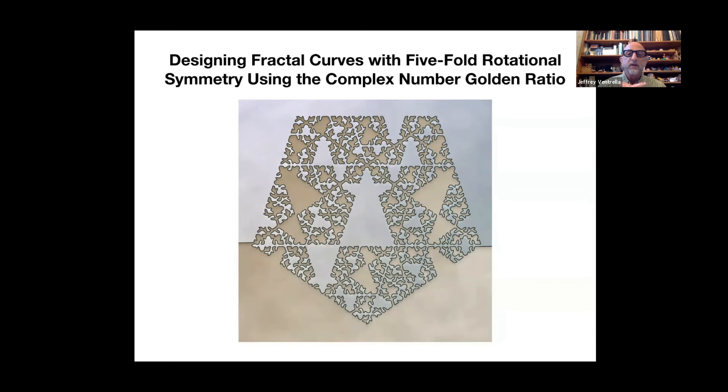This paper is called Designing Fractal Curves with Five-Fold Rotational Symmetry, Using the Complex Number Golden Ratio. You may be asking, what the hell is a complex number golden ratio? And I would say it is the golden ratio as derived in the complex plane by adding two algebraic integers. And I'll show you that in a moment.